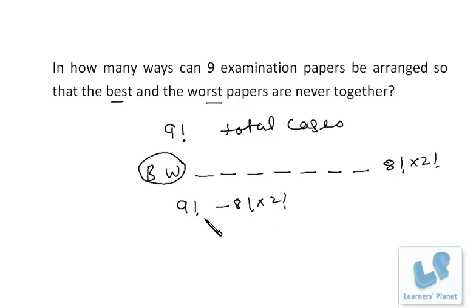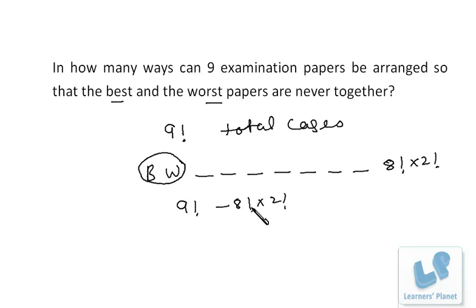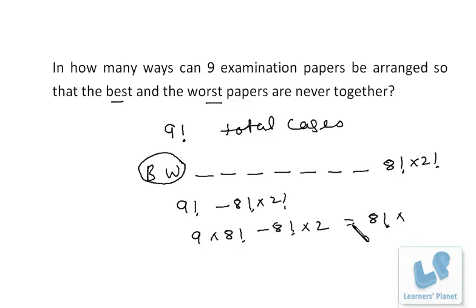The approach is like a reverse/complementary method: total cases minus cases when both are together gives cases when they are never together. If you are appearing for a competitive exam, the options may be in this format. You can also solve it as: 9! − 8! × 2! = 9 × 8! − 2 × 8! = 8!(9 − 2) = 7 × 8!. Your answer may be presented in this simplified manner.